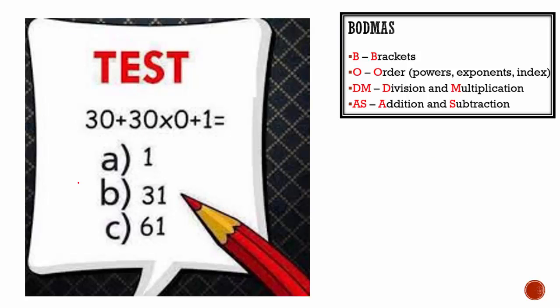This one again — no brackets, no order, so we divide and multiply first. 30 plus 30 multiplied by 0 is 0, plus 1. 30 plus 0 is 30, 30 plus 1 is equal to 31. So we get B.